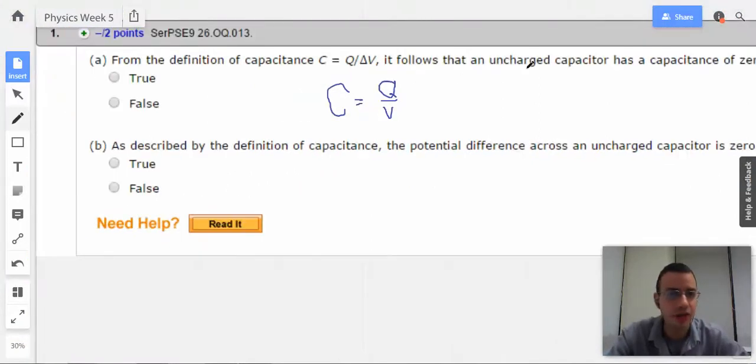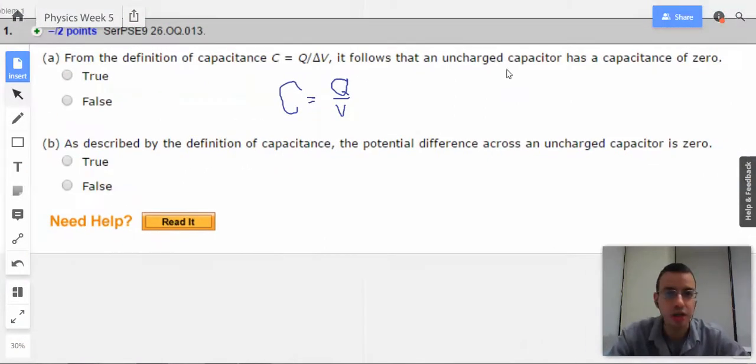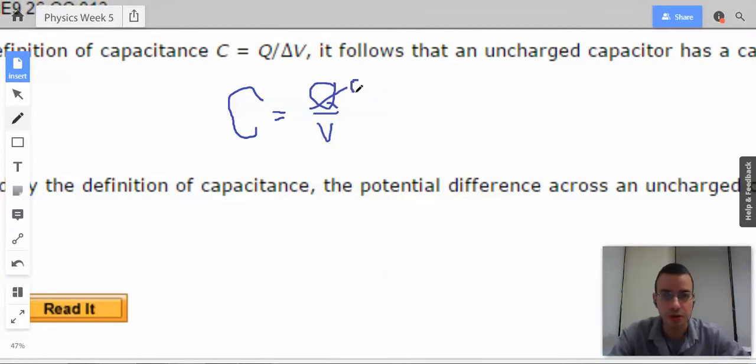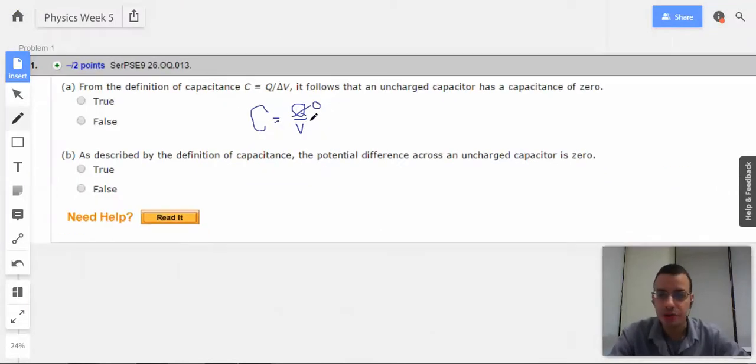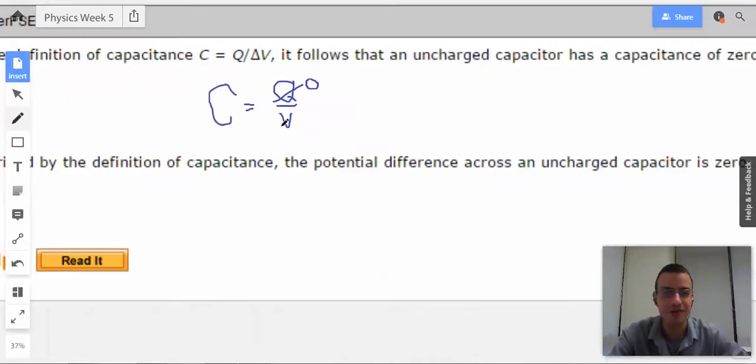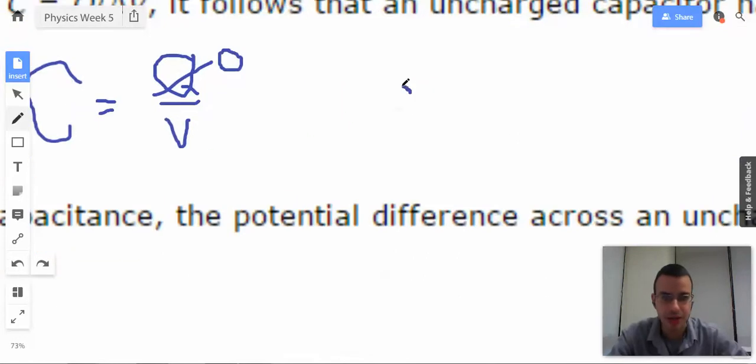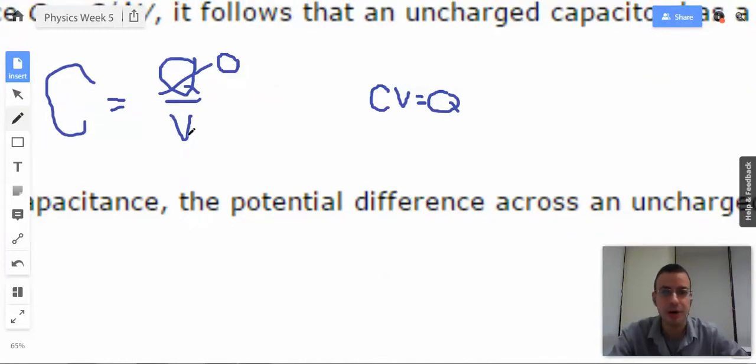So what they're saying here is that when the uncharged basically means Q goes to 0, they're saying that, well that means that C has to equal 0. No. Not true. So it can also mean that V can also equal 0. So we can rewrite this as C V equals Q. So when Q equals 0, that means either C or V equals 0. You can't tell from this case because 0 over 0 is an indeterminate form.